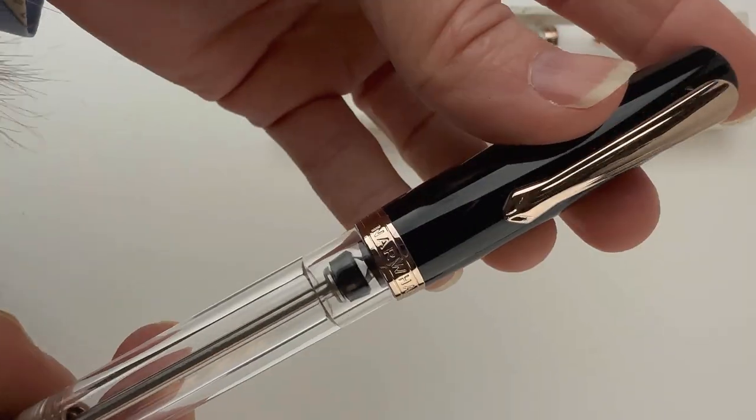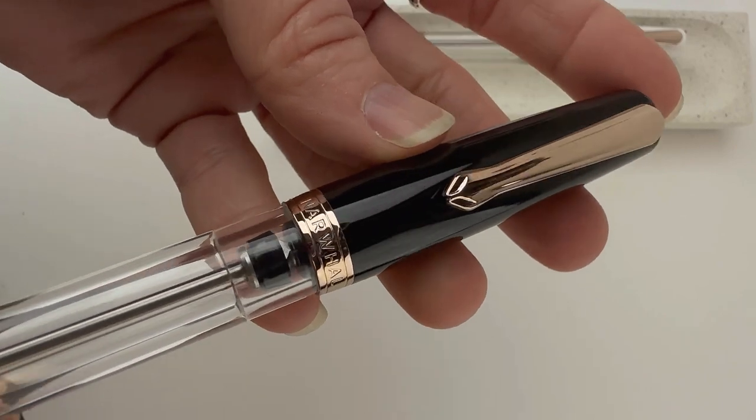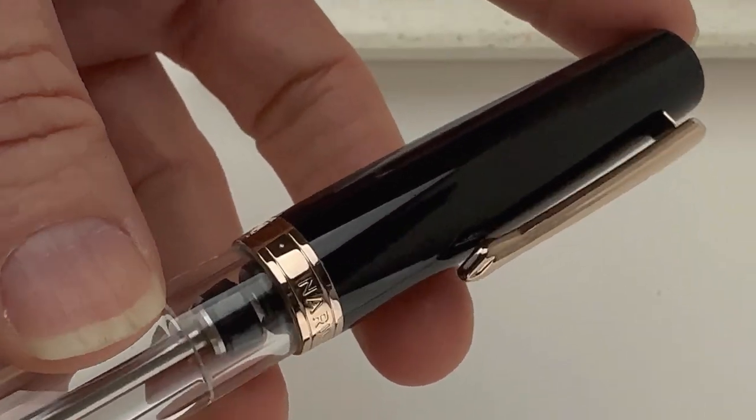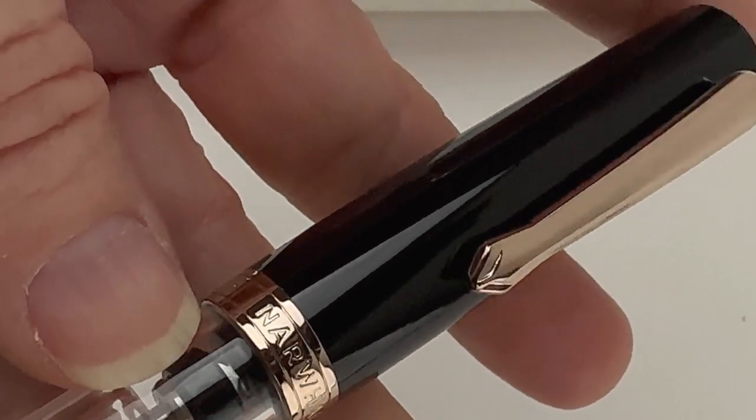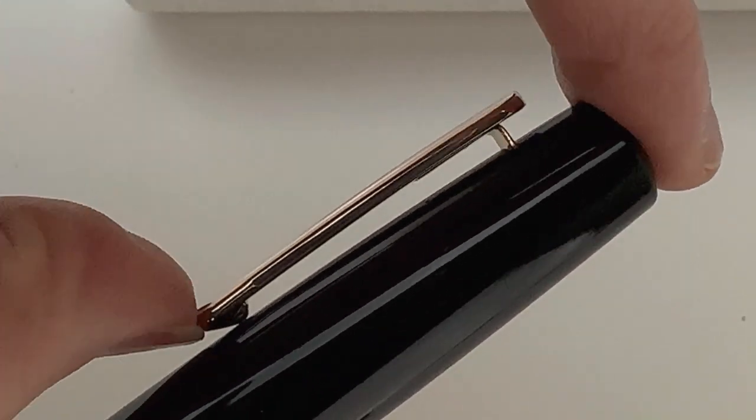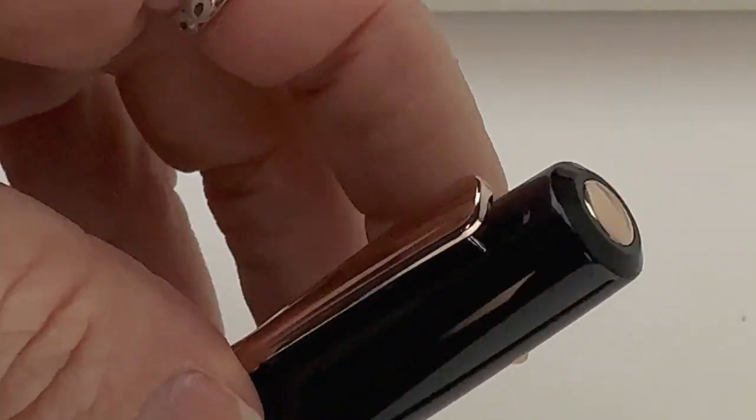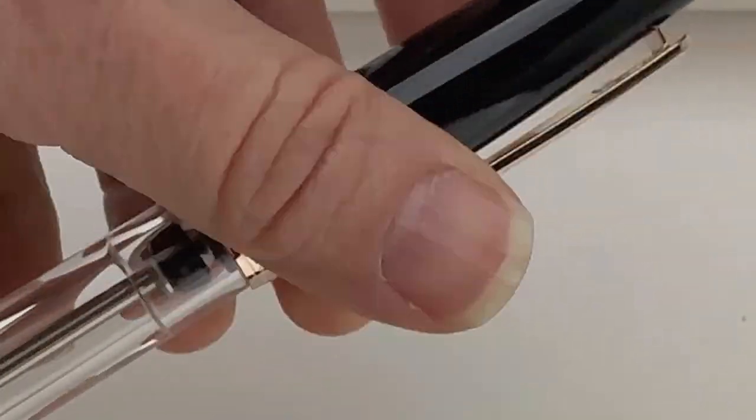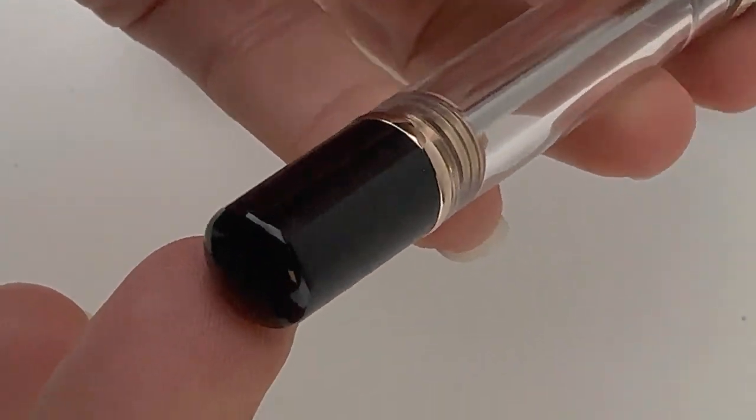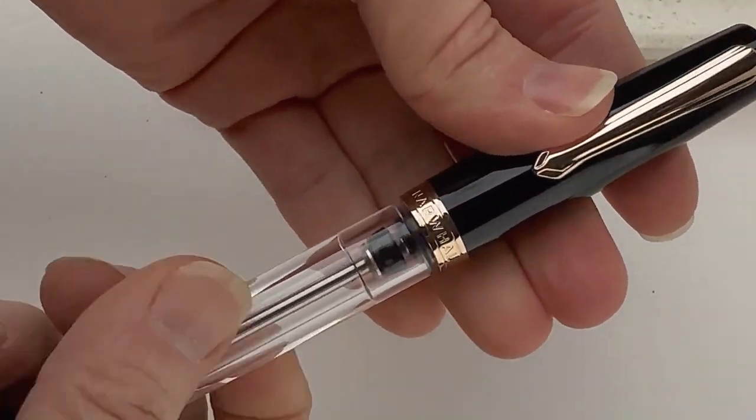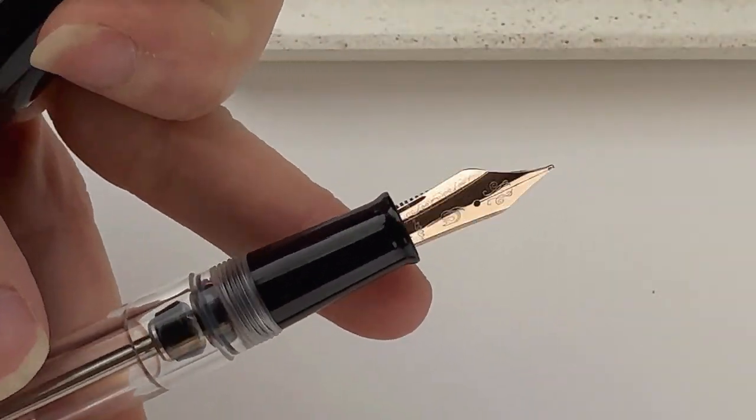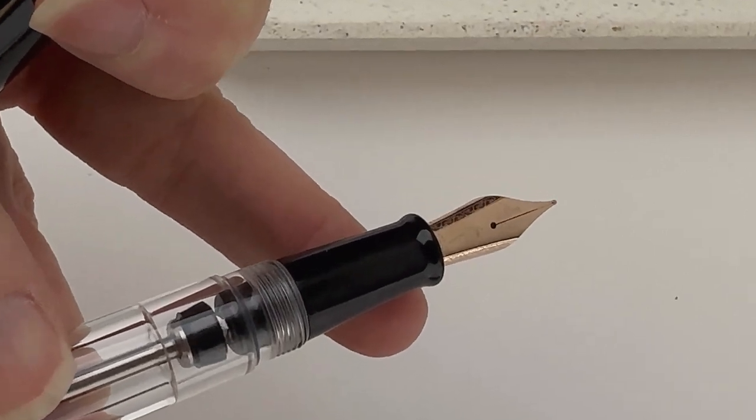So let's take a better look at this. You can see the clear, transparent barrel there that really lets you check out that vacuum filler. The rose gold trim—both of them have rose gold trim—has the Narwhal name on the center ring, and then you have the lever pin clip. The cap and the back end of the barrel are the solid color resin, and then you have the section that's going to match the cap and back.